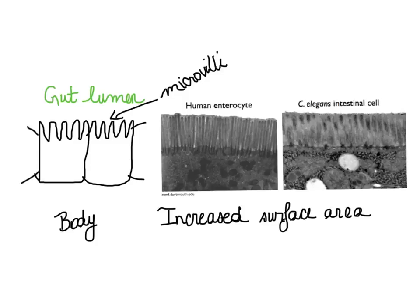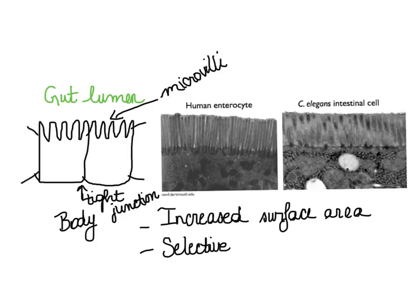Pause the video and think about what aspects of these epithelial cells are specialized in the small intestine, referring to your textbook or other references on epithelial tissues. In addition, because absorption needs to be highly selective, tight junctions are formed between these epithelial cells to ensure that nutrients have to go through the selective cells before they enter the body. Based on our discussion of membrane proteins in previous lectures, you should be able to predict what kinds of proteins are likely found within the membranes of these cells.